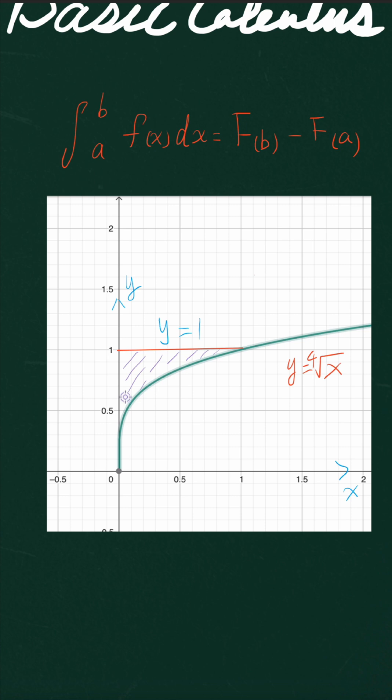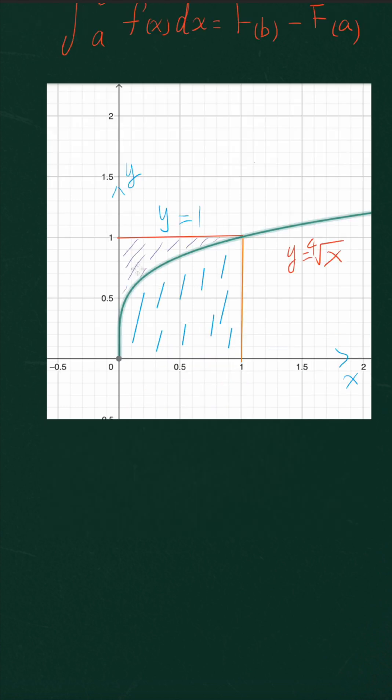Actually there are two ways to find the area over here. The first method is to consider this area as the difference between this square and the area under the curve of y equals the fourth root of x. We're going to name the area that we are finding S equals the area of the square, which is 1 times 1, which is 1,